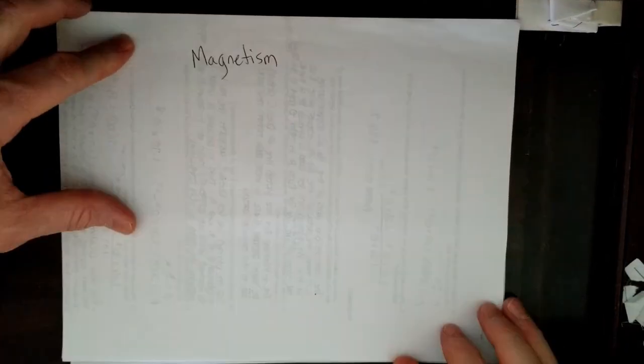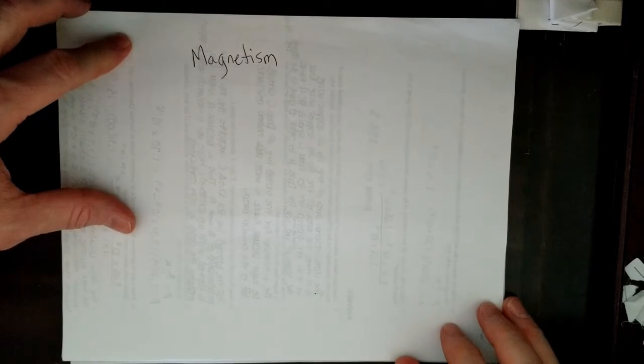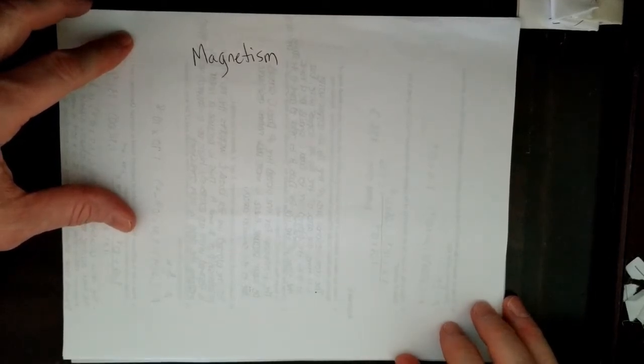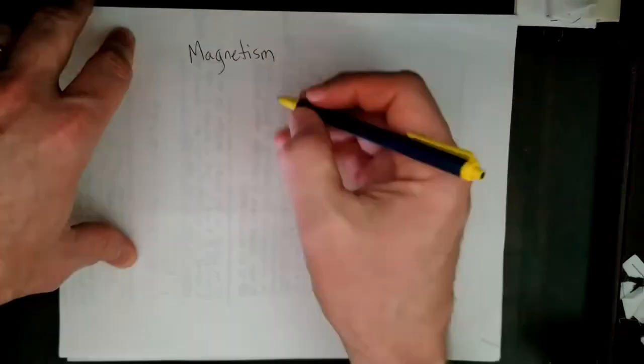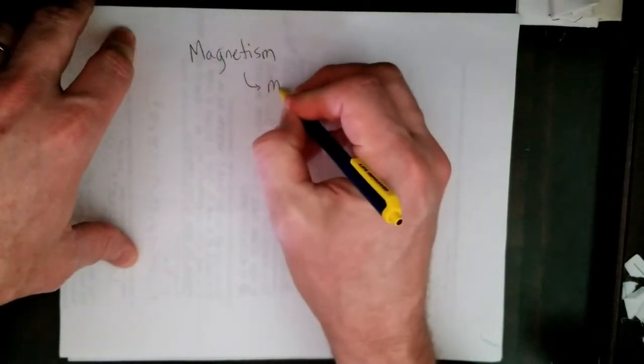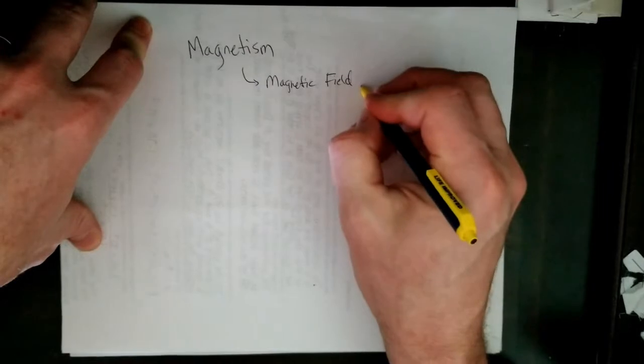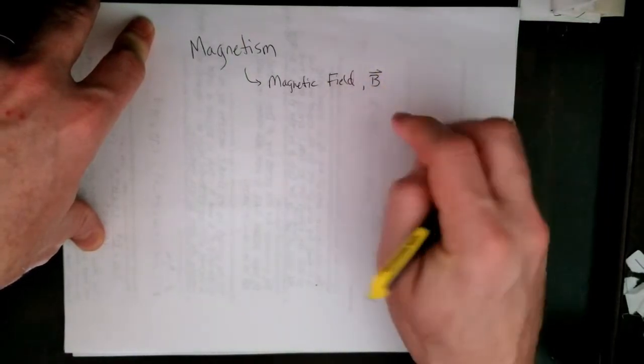Let's talk about magnetism. Now we don't talk about magnetic force in the way that we talk about electric force. There's not a nice little formula for it. We generally talk in terms of magnetic field. The symbol for it is a B. It is a vector.